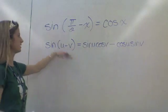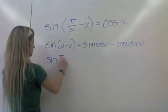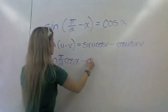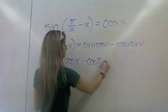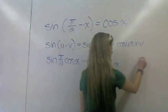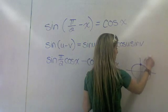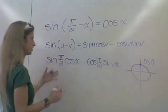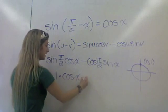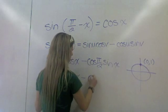So now we're just going to apply this identity with a substitution. It's going to be the sine of u, which is pi over 2, times the cosine of v, which is x, minus the cosine of u — cosine of pi over 2 — times the sine of v, which is x. From our unit circle that I showed in the last example, that point is 0 comma 1, which means cosine is 0 and sine is 1.